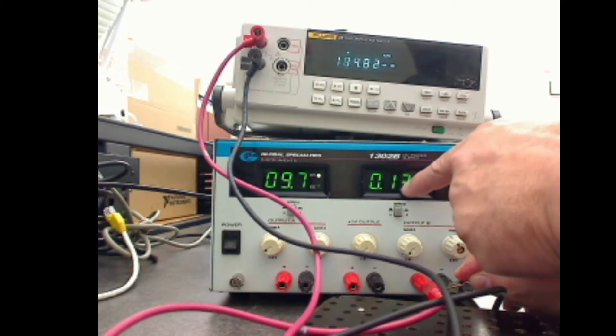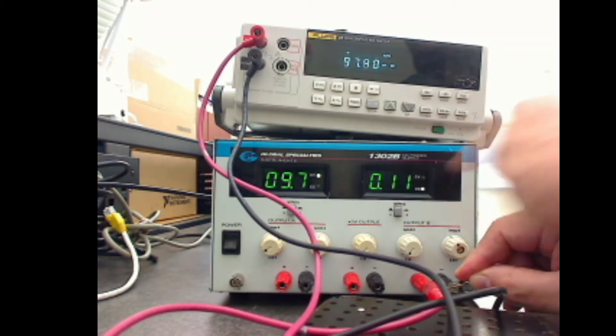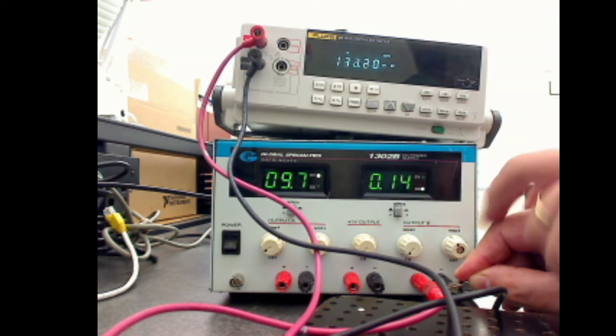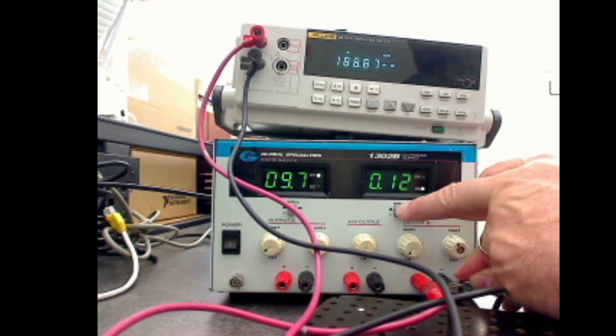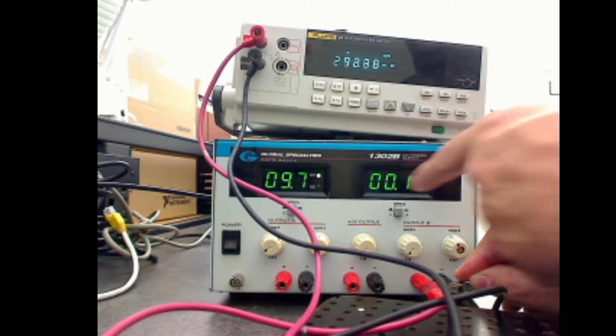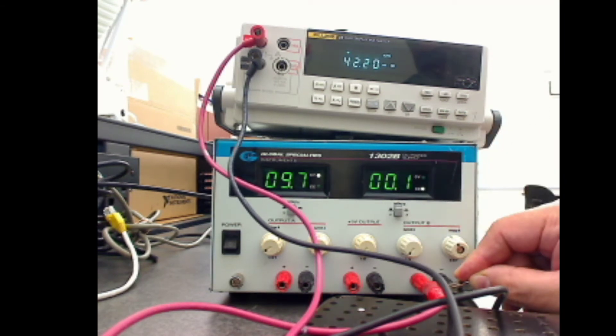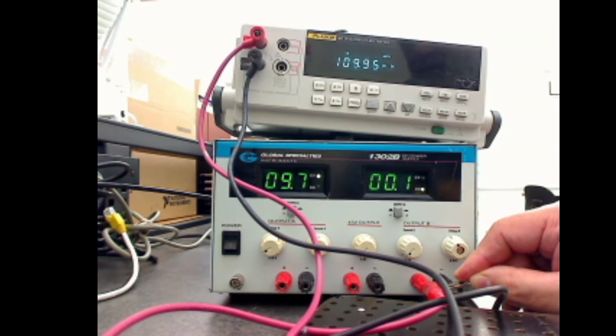Alright, so the current's kind of fluctuating because the circuitry in there is saying, hey, this is awful high, and it's limiting that. But notice the voltage has dropped to zero. Remember, you've got to flip this switch to see the voltage or the current. So this is the voltage - it's shorted out, so it's basically zero.